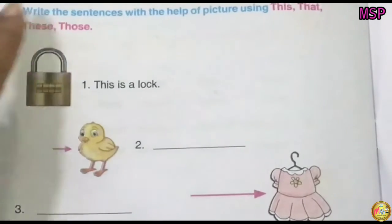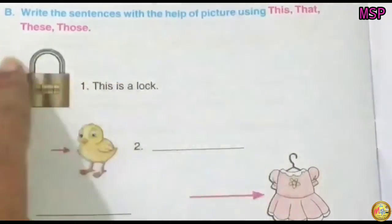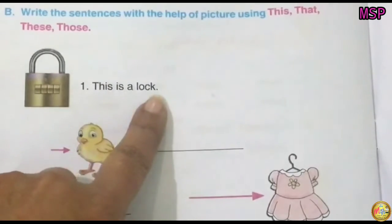Now we have part B. Write the sentences with the help of picture using this, that, these, those. Here you can see a lock. This is a lock.